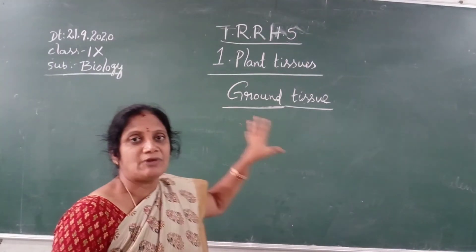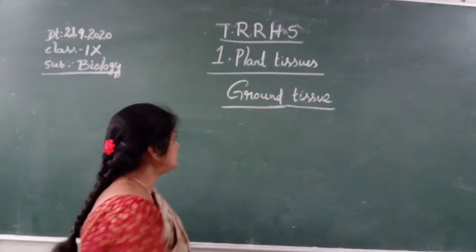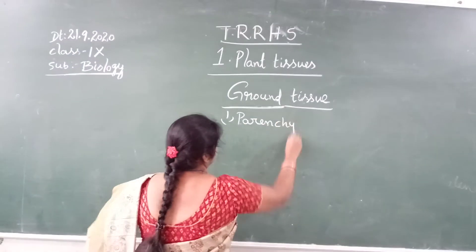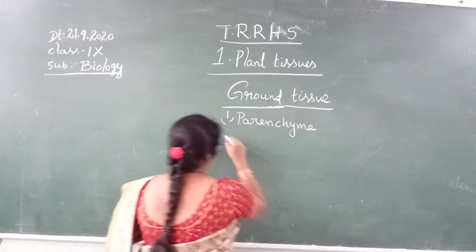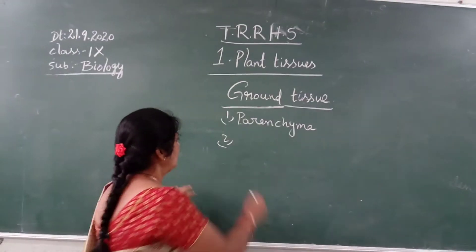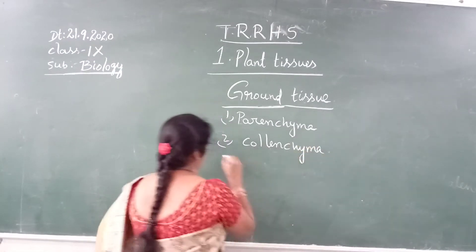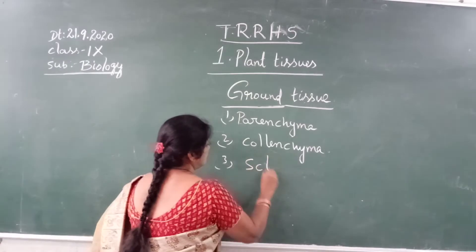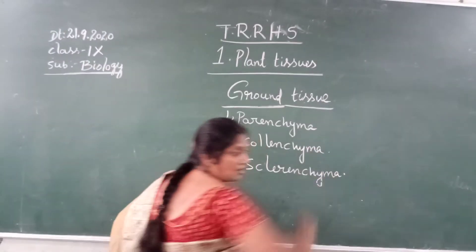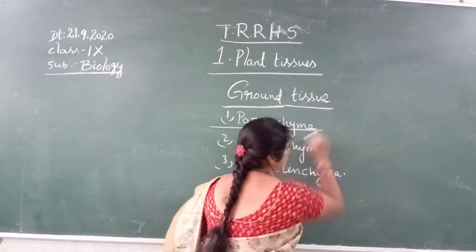Depending upon the function, this ground tissue is divided into three types. The first one is cortex. It contains three types of cells: parenchyma, collenchyma, and sclerenchyma. First we will discuss about the parenchyma.